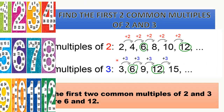So what you can see here? If you are writing the multiples of 2 and 3 together, we can see that 6 is common here. And if you move further, 12 is common. So there is no end to the common multiples as well. The question given is: find the first two common multiples of 2 and 3. By looking at this example, we can say that the first two common multiples of 2 and 3 are 6 and 12.